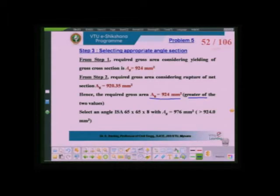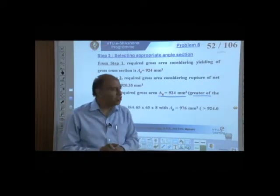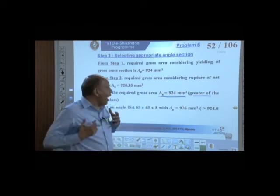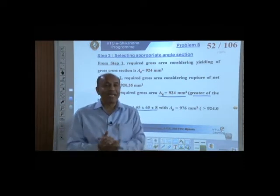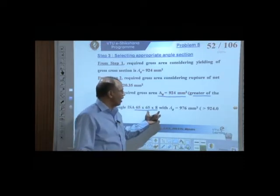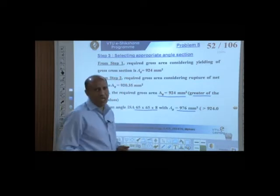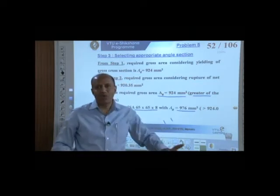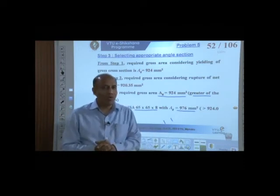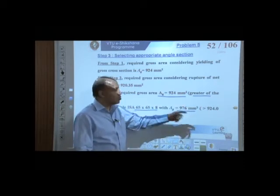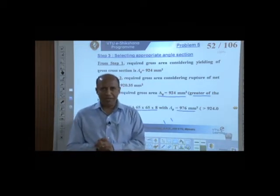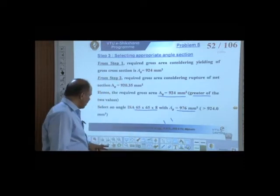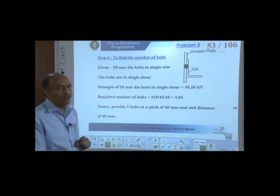Having got this value, open your steel tables and find an appropriate angle whose area is slightly larger than 924 mm². I have chosen a 65×65×8 equal-legged angle, whose area is 976 mm². You can pick any angle — equal or unequal leg — provided the area is larger than 924 mm². We will proceed with the 65×65×8 section.